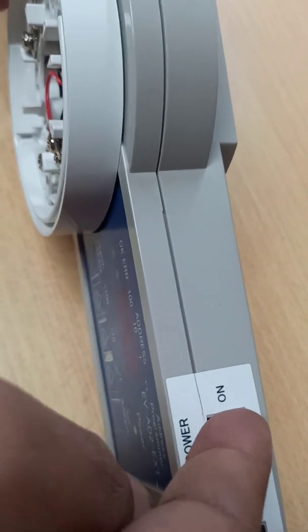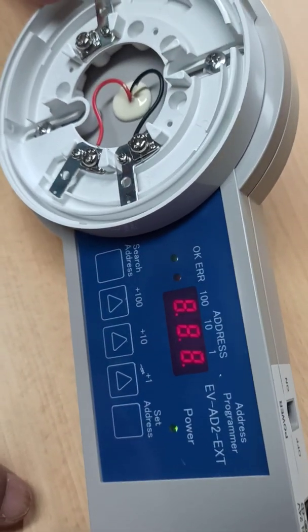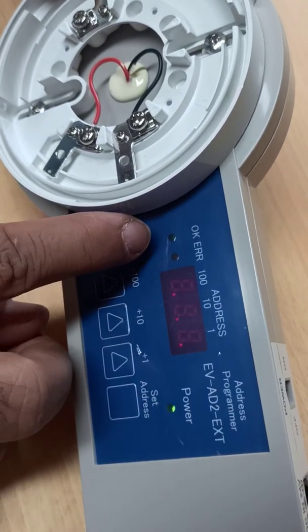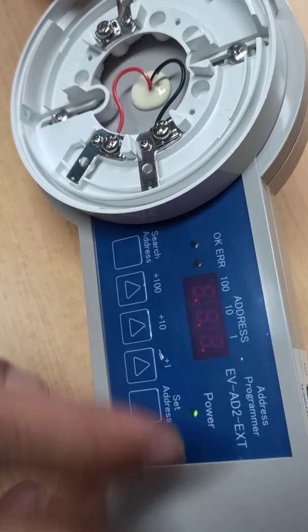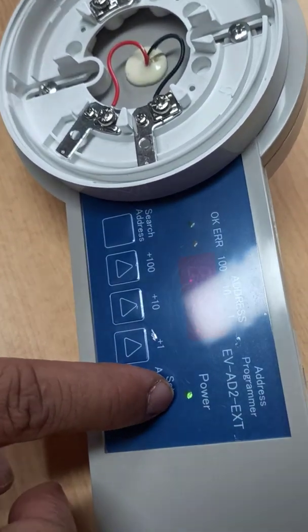Just see, I'm switching on now. See, the sound came and all these lights glowed and now they became dim. Now power light is green.